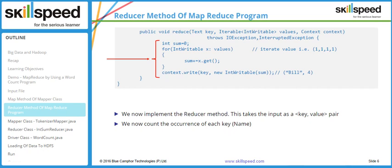The reduce method is called once for each key — if we have five keys, it is called five times. We declare a variable called 'sum' initialized to zero, and all values for a given key are added and stored in 'sum'. For example, Bill with four occurrences results in sum=4. Finally, context.write outputs the key 'Bill' and second argument 'sum' whose value is 4.